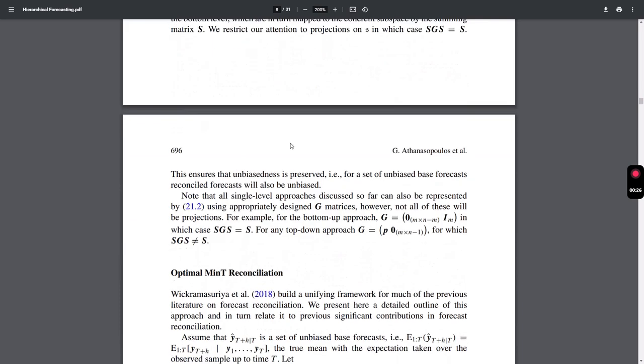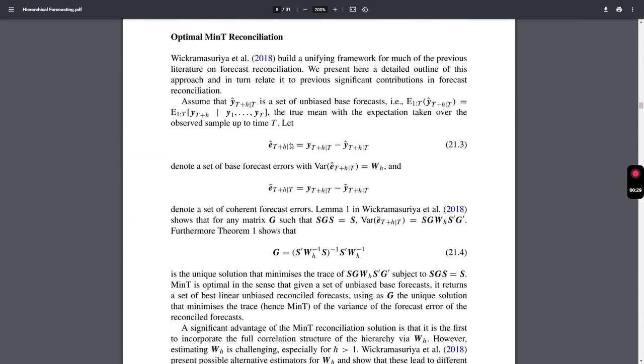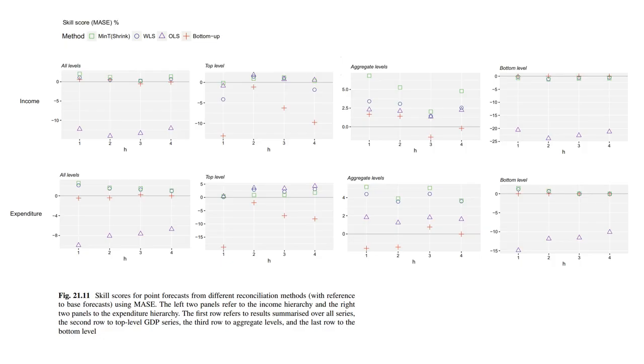Reconciliation rocks, especially the minimum-trace reconciliation. Whereas the ordinary least squares and bottom-up approaches scored poorly compared to reconciliation using the minimum trace. However, reconciliation starts to lose performance when the hierarchies are big.